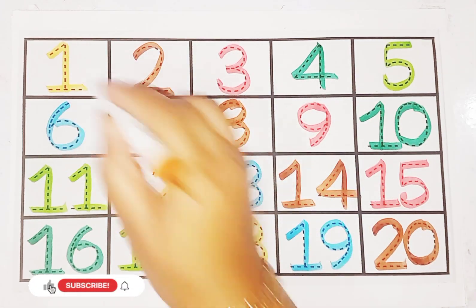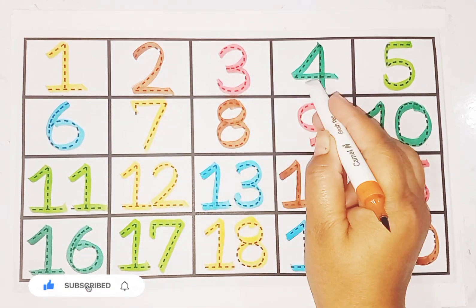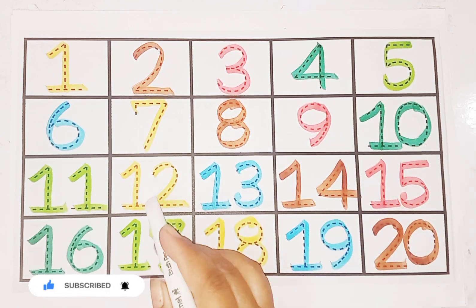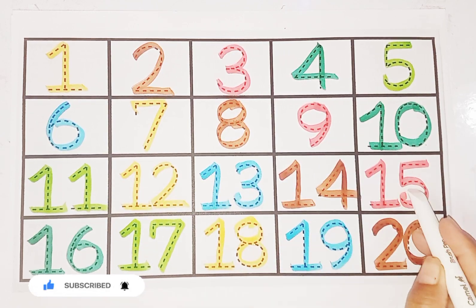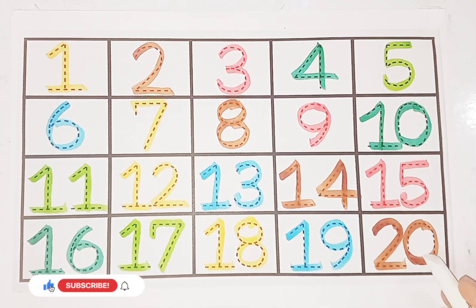today we learn counting 1, 2, 20. Let's revise. 1, 2, 3, 4, 5, 6, 7, 8, 9, 10, 11, 12, 13, 14, 15, 16, 17, 18, 19, 20.